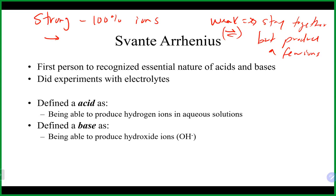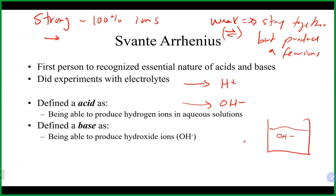Arrhenius defined an acid as something able to produce hydrogen ions in solution, while a base produces hydroxide. If you see H⁺ on the product side or OH⁻ on the product side, free by itself, you have either an acid or a base. The amount of each of those in solution will determine whether it's acidic, basic, or neutral.